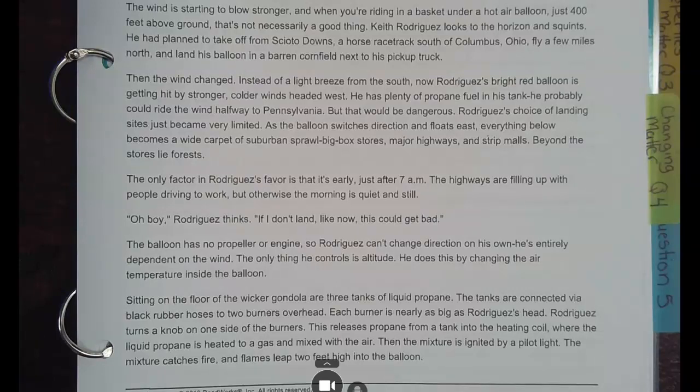As the balloon switches direction and floats east, everything below becomes a wide carpet of suburban sprawl, big box stores, major highways, and strip malls. Beyond the stores lie forests. So when you are a balloon, if you've ever set a balloon up, I'm not recommending this because balloons get into tractor or farmer fields get tangled up in tractors and cause enormous damage, right? But let's pretend I had a balloon on a string, it was tied tightly to Miss Richardson's wrist. And if I send it up, you can see which way the wind is going, right? And you can see how fast or how far or whatever it's doing. Well, that's what's going on with this. It's a big giant balloon. It's been released into the sky. He has a little bit of ways he can control it. But can you control a balloon very much with the string?